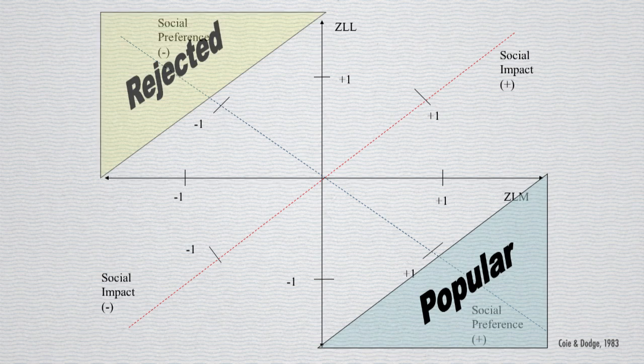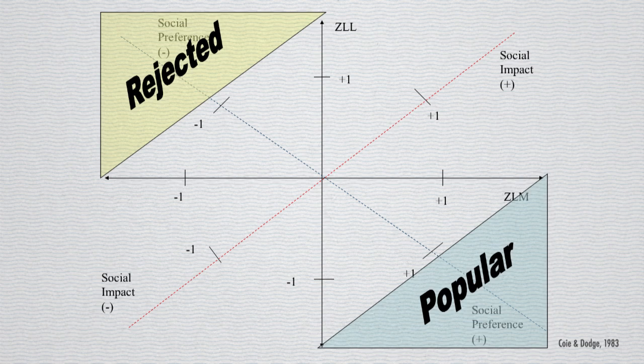Their counterparts are the kids that are rejected. So they're opposite therefore. These are the kids that are very frequently picked as being liked the least and they're very infrequently picked as being liked the most.